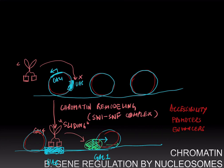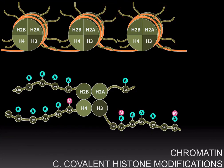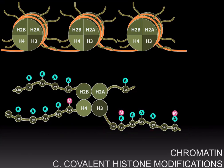Chromatin therefore plays a role in regulating the accessibility of DNA sequences — including enhancers and promoters — to transcription factors, thereby regulating the expression of different genes. If nucleosomes regulate gene expression by controlling the accessibility of DNA to transcription factors, what determines how tightly nucleosomes bind DNA? It turns out that histone proteins have a domain called the flexible tail, and the amino acids on these tails can be covalently modified.